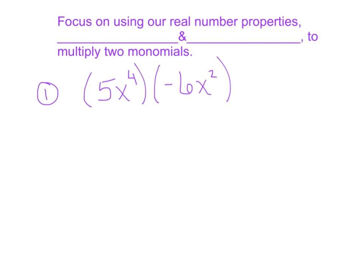In our next example, we're going to focus on using some real number properties we used the last two days — specifically the commutative property and the associative property. The commutative property says that when adding or multiplying two things, we can flip the order. The associative property says we can change the grouping, or move the parentheses around, when adding or multiplying.